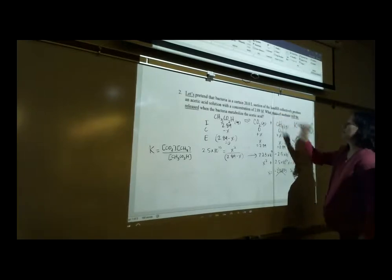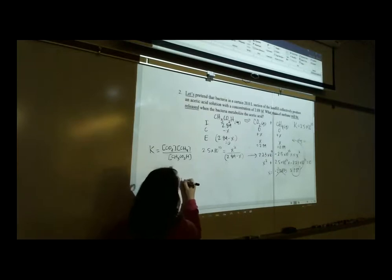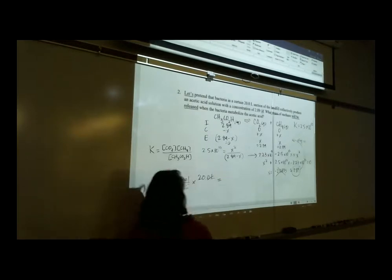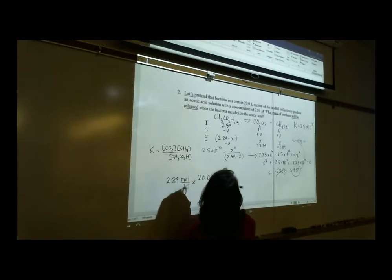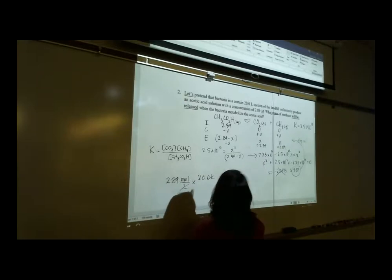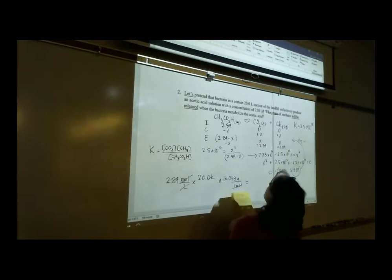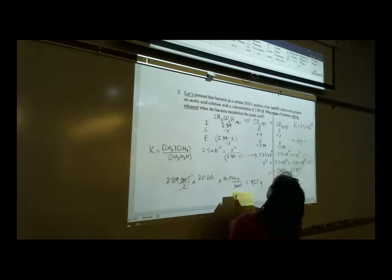The problem asks for mass, not concentration. The molarity of CH₄ is 2.89 mol/L, and the volume is 20 liters, giving 2.89 × 20 = 57.8 moles. Methane has a molar mass of 16 g/mol. Multiplying gives the mass in grams. Rounded to three significant figures, that's 927 grams of methane released.